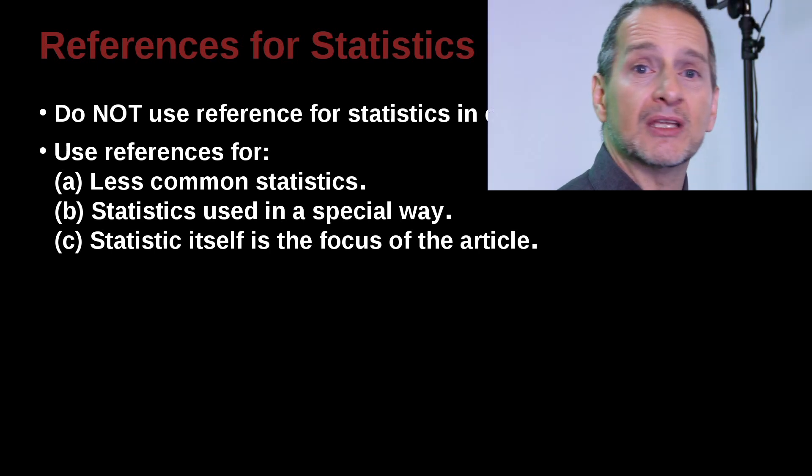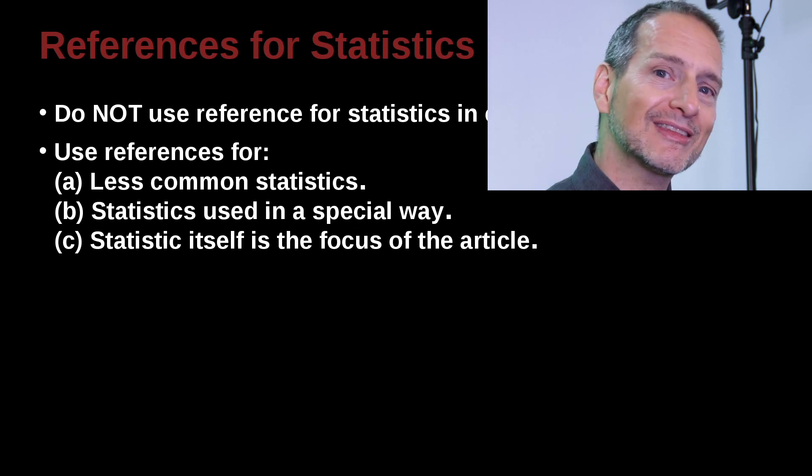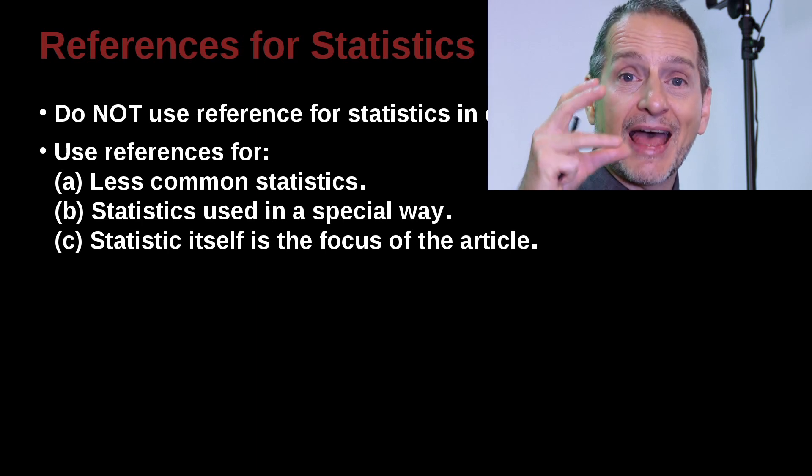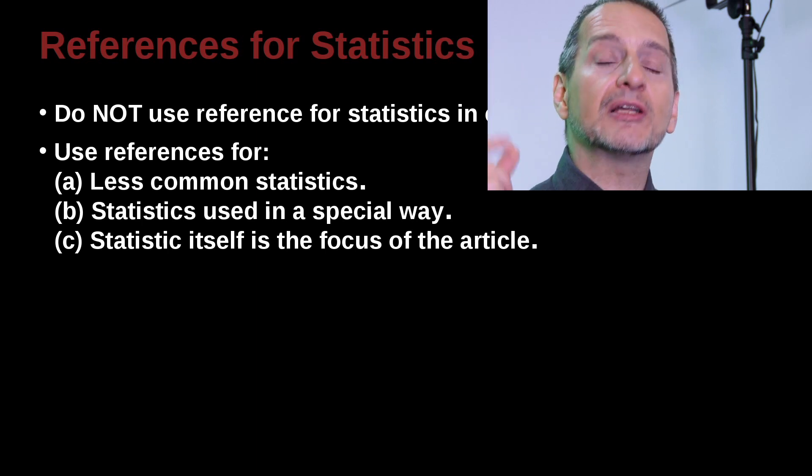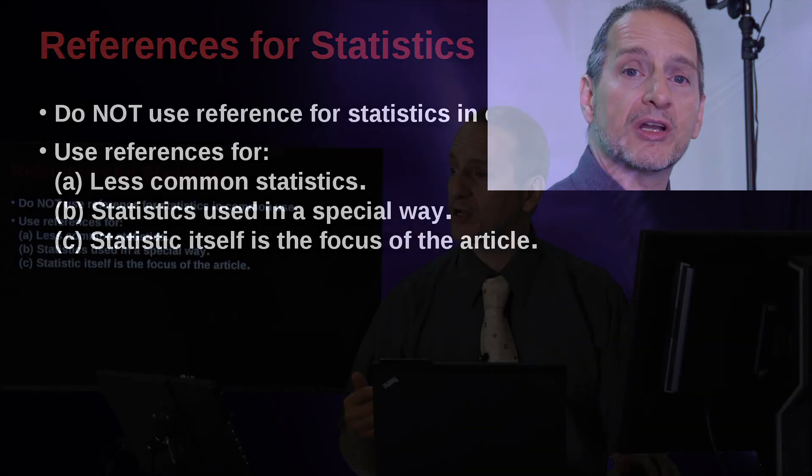So in this case, that means that if the article you're writing is about statistics, or a statistical test, or a statistical method, or even something like a meta-analysis, where you're actually manipulating the data through a statistical formula, then you probably need to reference who did you get that from, where did it come from?